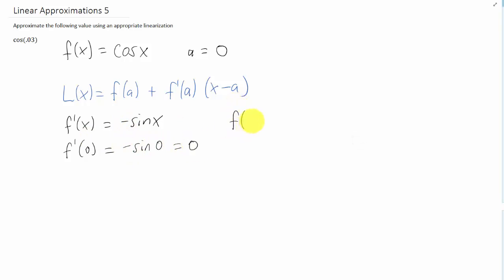We also need a value for the function at the given a value. So we're going to have cosine of 0, and you know from your trigonometry the cosine of 0 equals 1. We are going to plug the slope of our tangent line in right here. We're going to plug in the y value that we just found right here, and we're going to plug in the given a value right here.